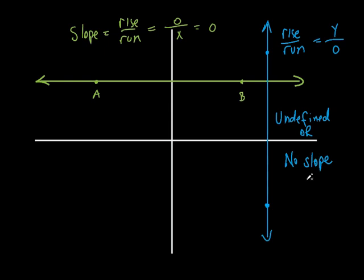Sometimes teachers teach it as empty set or the null set — it means it doesn't exist, it means there's nothing in there. It doesn't mean it's zero. Zero does exist — zero is a number, it's on our number line. This slope doesn't exist at all. The line exists, but the slope doesn't. It's just like skiing — you would never see a slope like that. So it does not exist.